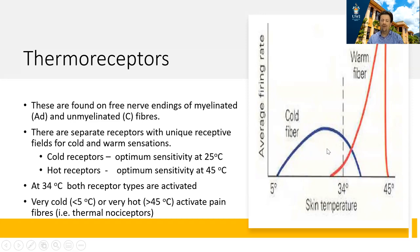Very hot temperatures greater than 45 degrees and very cold temperatures less than 5 degrees are picked up by a special class called thermal nociceptors. These detect temperature, but they cause the perception to be one of pain. Obviously, that is a warning for the body when you find yourself in very hot or very cold conditions.